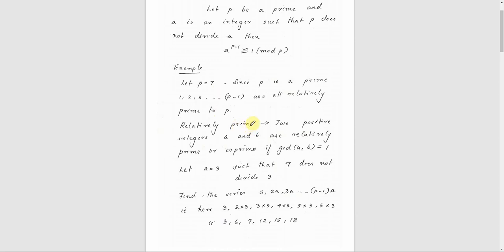The definition of relatively prime: two numbers A and B are relatively prime or co-prime if GCD of A and B is equal to 1. So for P equal to 7, the numbers 1 to P minus 1, that is 1, 2, 3, 4, 5, 6, are all relatively prime to P, which is 7.